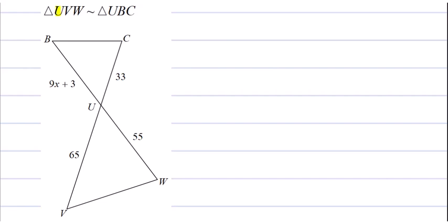And we're going to start with how we started before, just figure out how this thing is orientated to the other triangle. There's two triangles that are sitting together. One's upside down, one's right side up. UV, which is this side down here that is 65 long, that is corresponding to UB, this side, which is 9X plus 3.